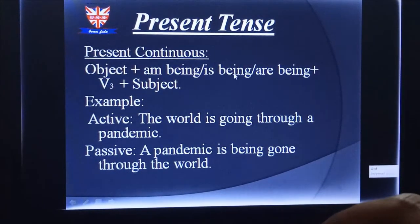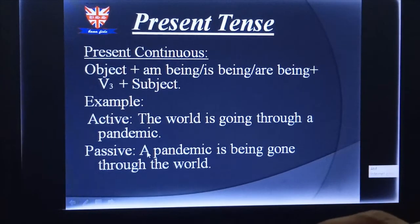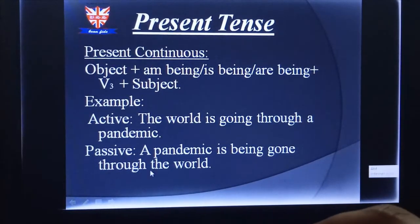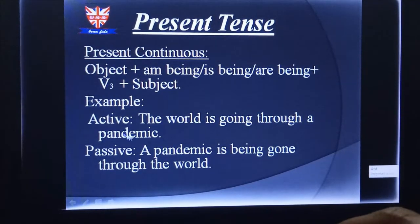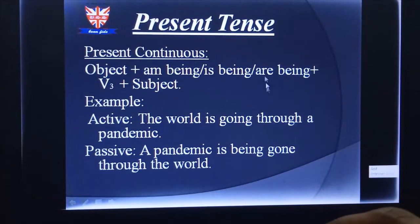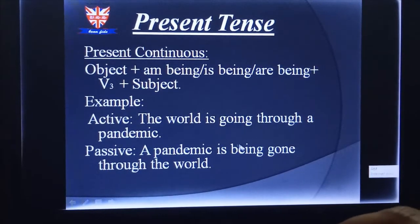For present continuous, the structure is: object + am being/is being/are being + V3 + by + subject. Look at the example. Active: 'The world is going through a pandemic.' In passive, it becomes: 'A pandemic is being gone through by the world.' Here, 'the world' — the subject — becomes the object in passive, and I used 'is being' because the subject is singular.